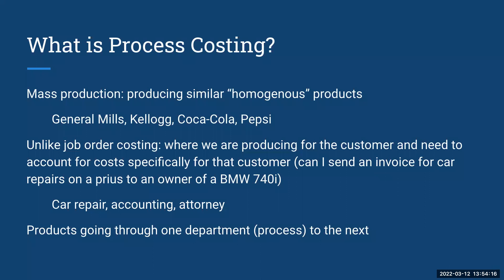When we're looking at job order costing, we're keeping track of the work in process by each individual customer. If I'm an attorney, I can't bill hours for customer X when I spent time on customer Y's account — I can't charge another customer for work I'm doing for somebody else. If I take my car in for a repair and I'm getting on my bill a muffler for a BMW, I'm going to say, wait a second, what's happening here? So in job order costing, we accumulate costs — labor, materials, and overhead — specifically for each individual customer.